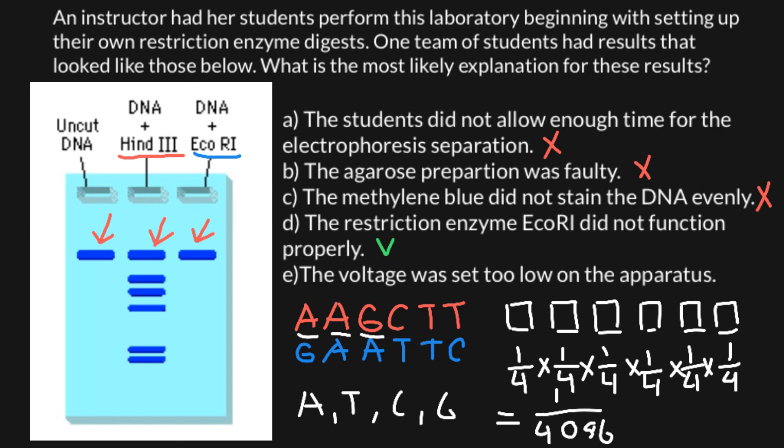And variant E: the voltage was set too low on the apparatus is also not true, because we see that on the second row, DNA cut with Hind3 enzyme had enough time for the bands to separate. So this is not the case. The only correct answer is answer D.